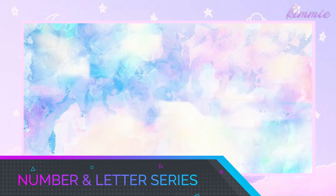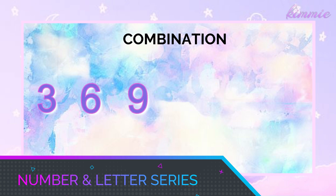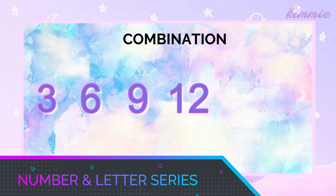The last part of inductive reasoning is the number and letter series. It's actually a combination of figure series and figure grouping, but these involve numbers and letters. For example, if you are given the numbers 3, 6, 9, 12, you need to find the next number in the series. All you need to check is the common difference: 3 plus 3 equals 6, plus 3 equals 9, plus 3 equals 12, then plus 3. So the answer will be 15.